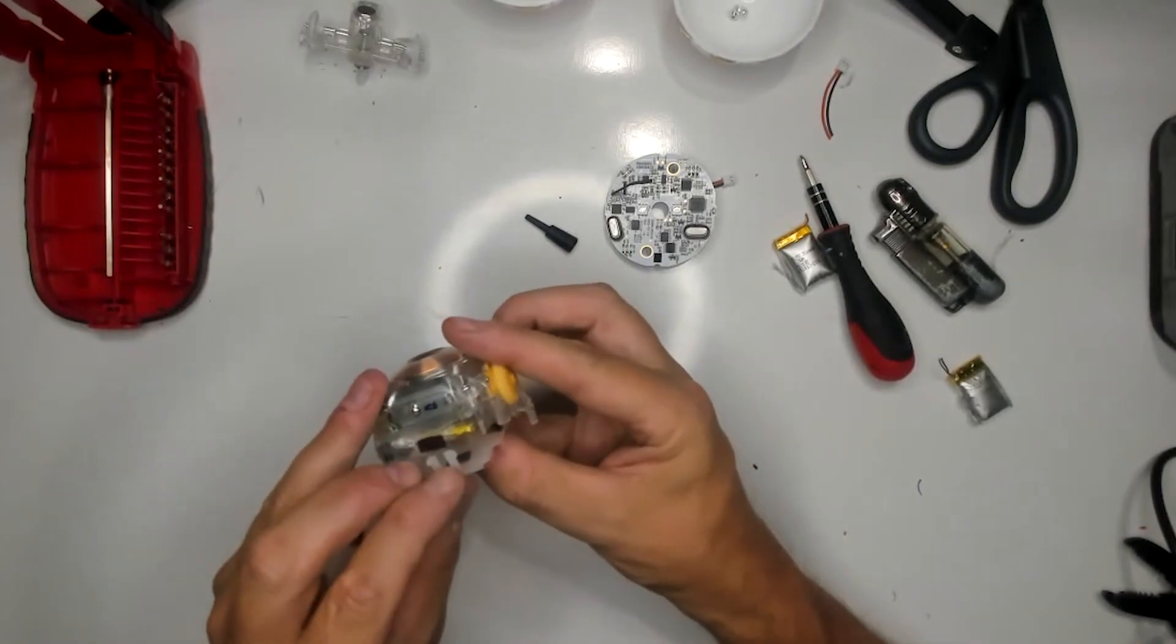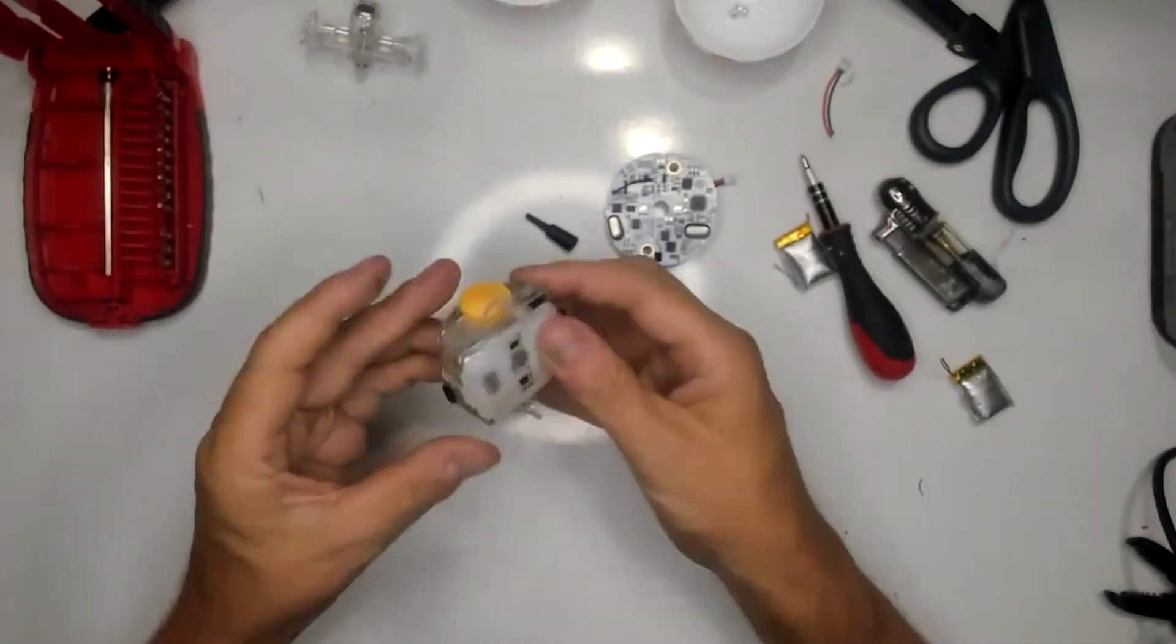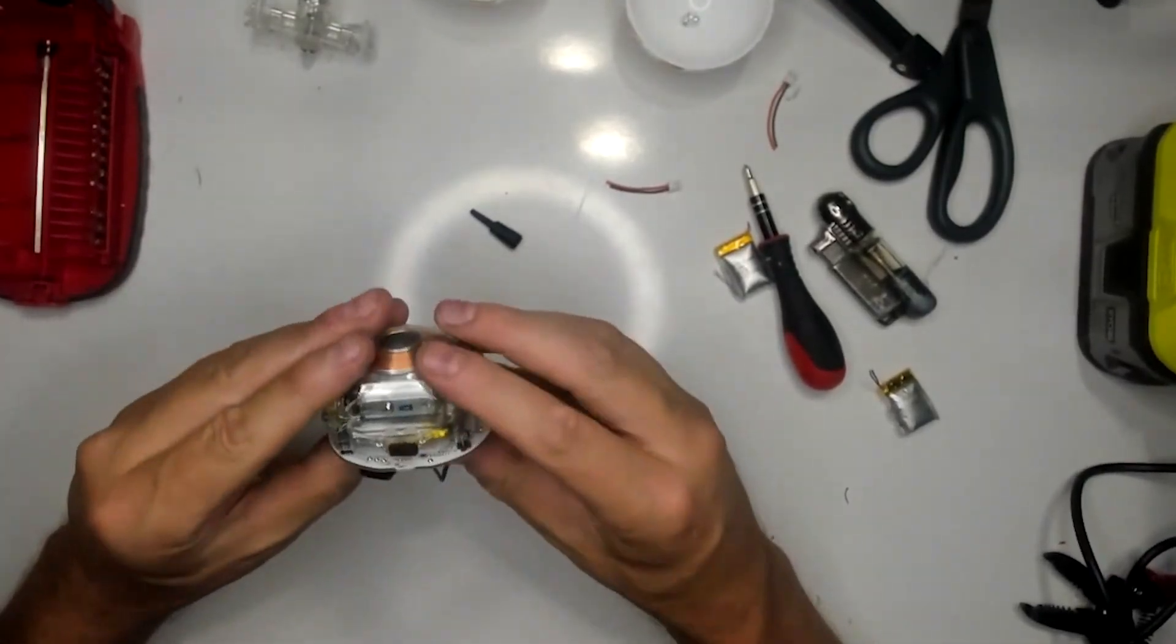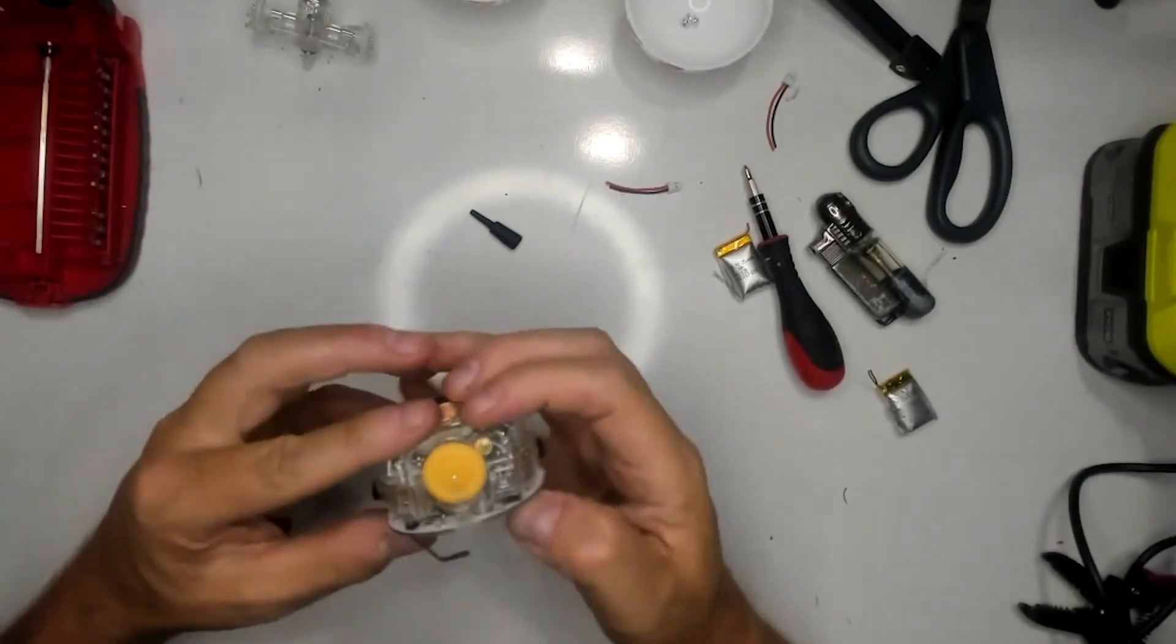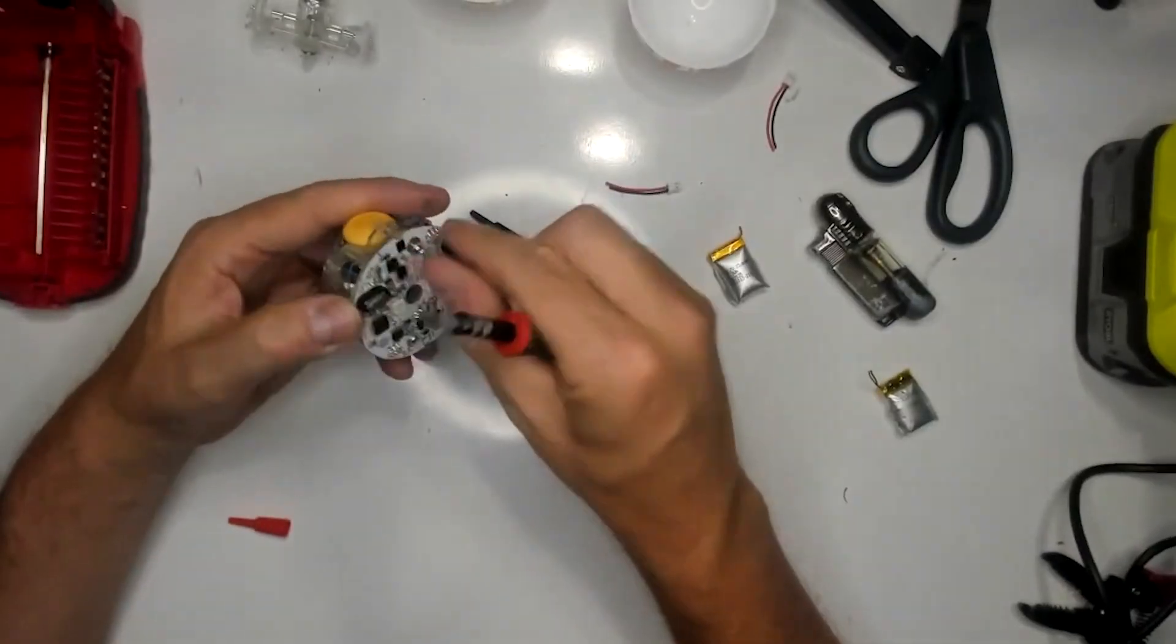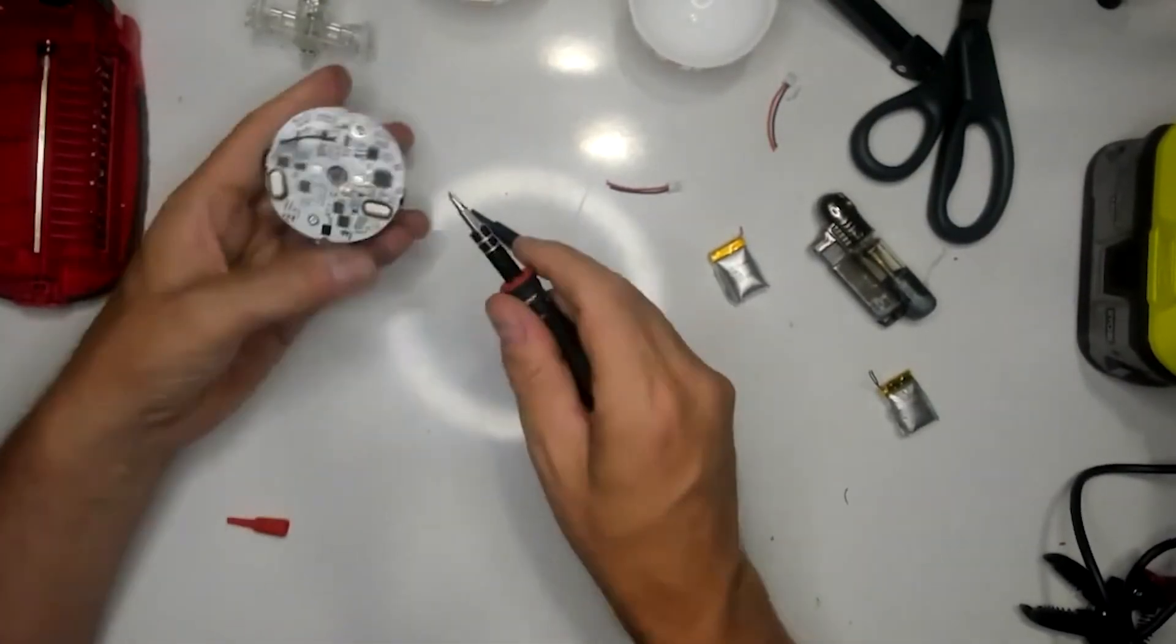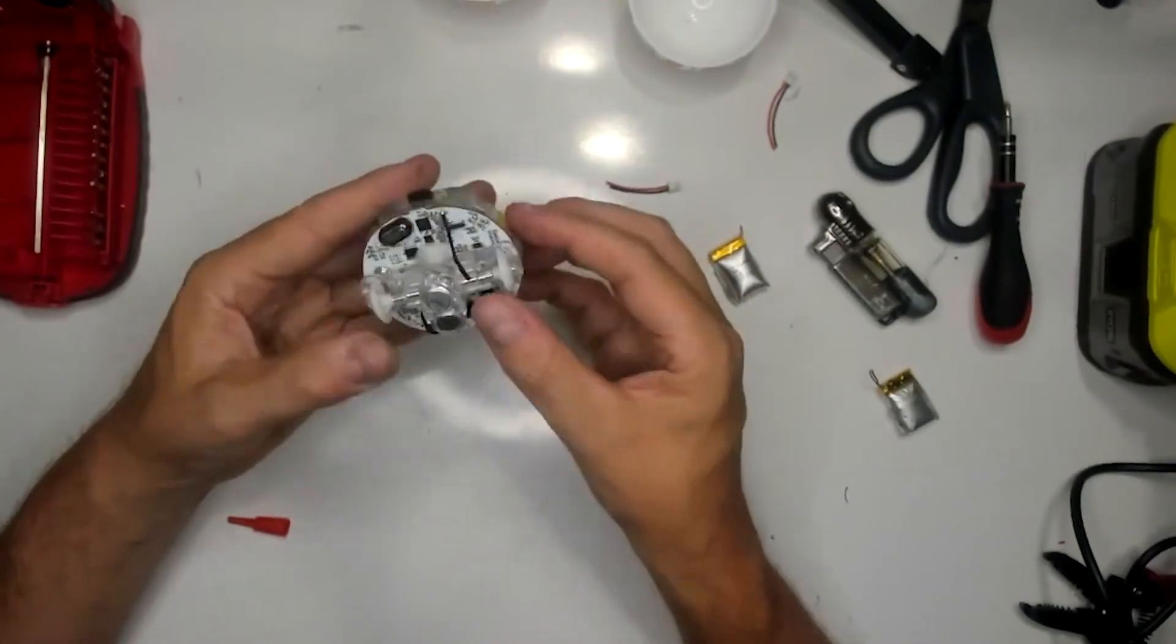Clip the little cover back into place that protects the batteries. Put the main board back on top of the unit, just be careful with the pins, make sure they're aligned properly before you start putting any pressure. Screw the main board back into place. Set the plastic piece back on top of the unit.